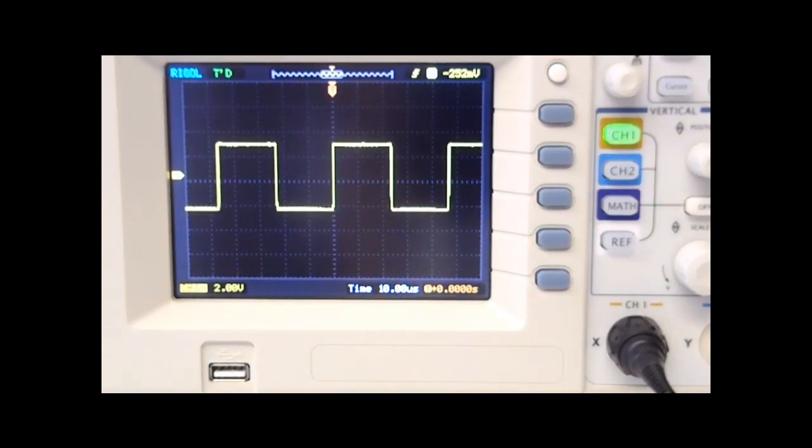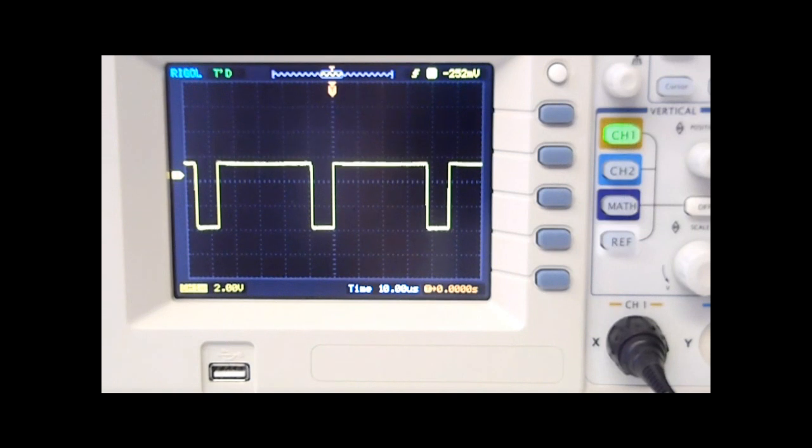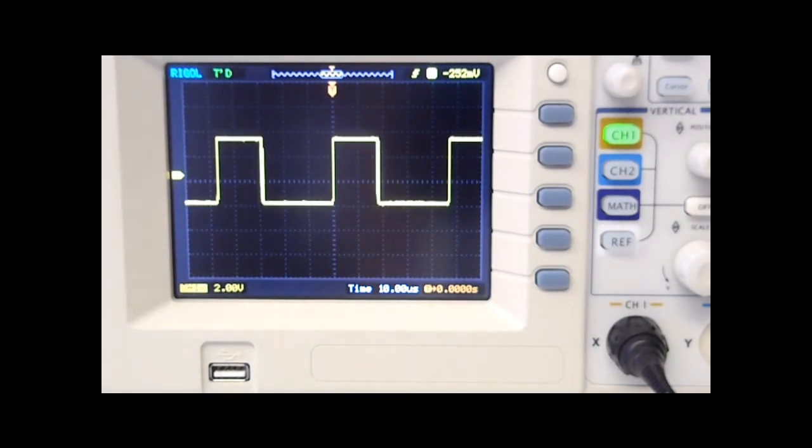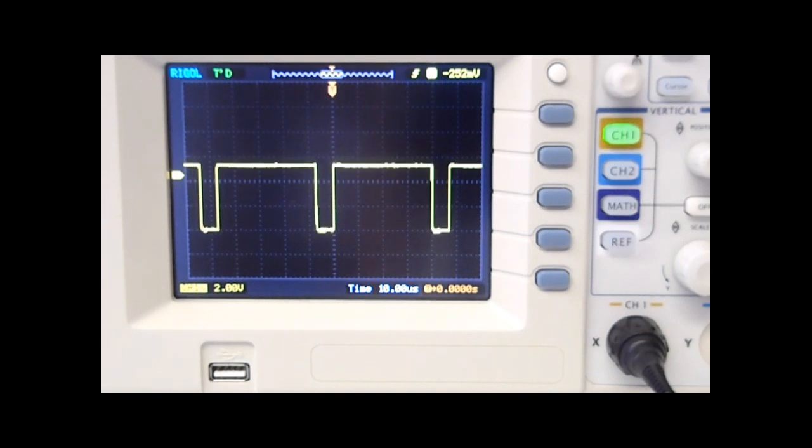Most function generators have the ability to adjust the duty cycle of which the waveform occurs. What this allows us to do is to simulate a pulse width modulation, for example dimming or brightening an LED.